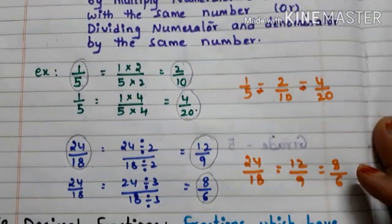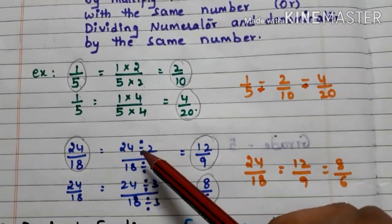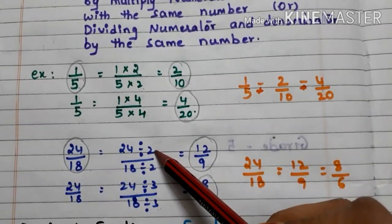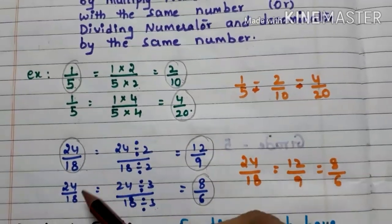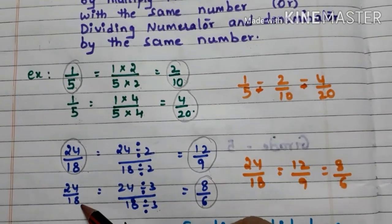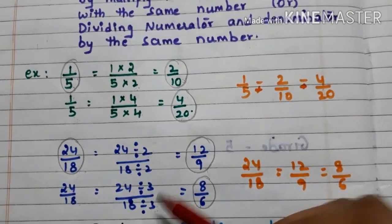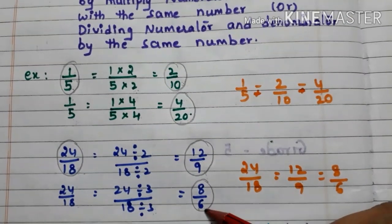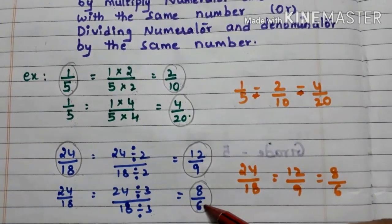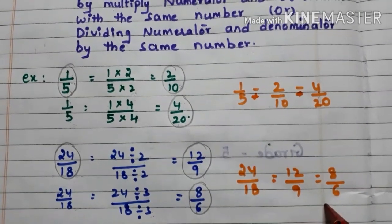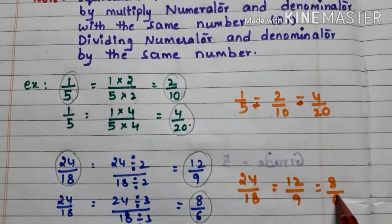Let us take another example. Here we have the fraction 24 by 18. Dividing the numerator and denominator by 2 gives 12 by 9. Taking 24 by 18 again and dividing by 3 gives 8 by 6. So 24 by 18, 12 by 9, and 8 by 6 are said to be equivalent fractions because these three fractions have the same value.